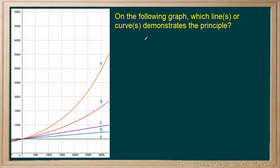So in this question we're asked which line or curve demonstrates the principle? And looking at a graph like this, we're used to recognizing compound and simple interest.